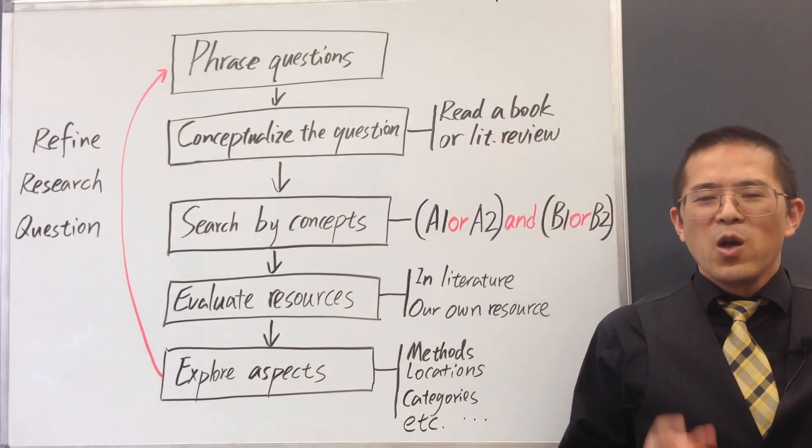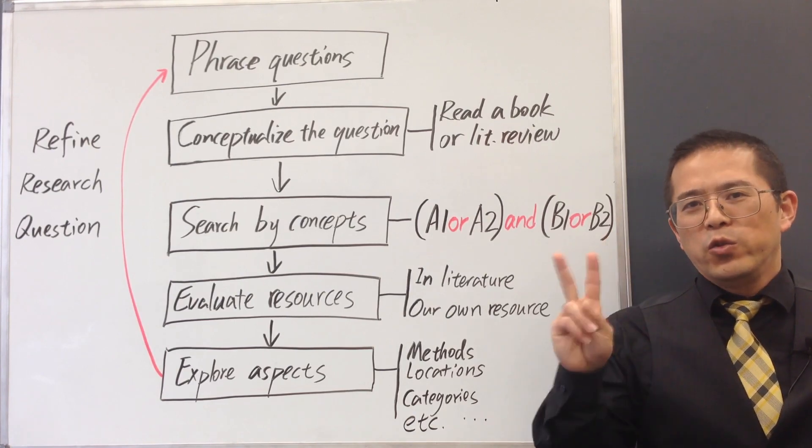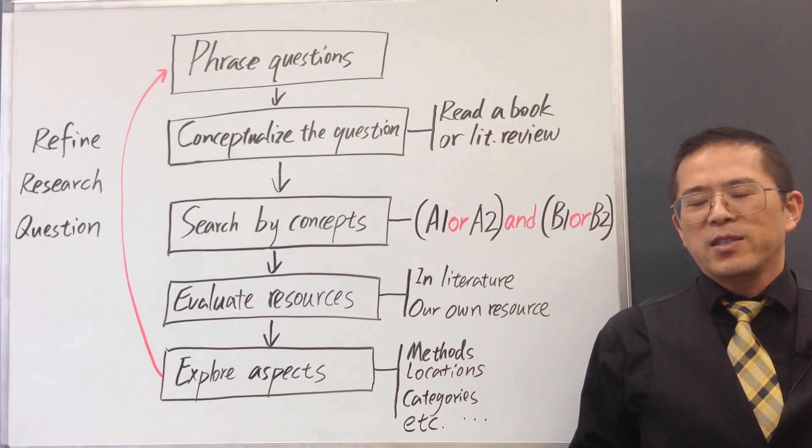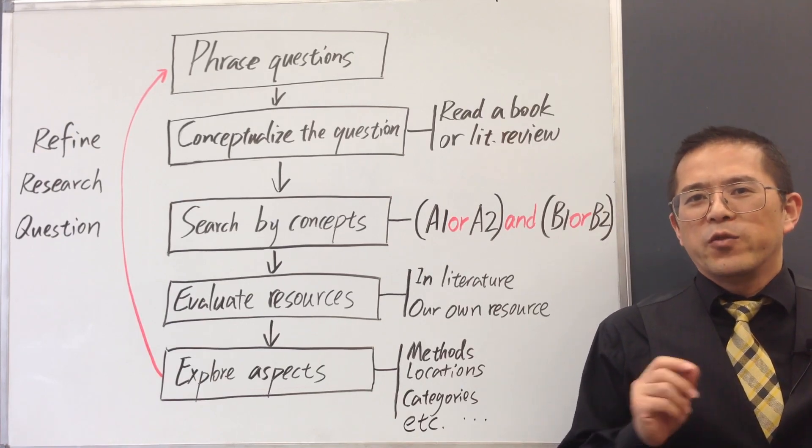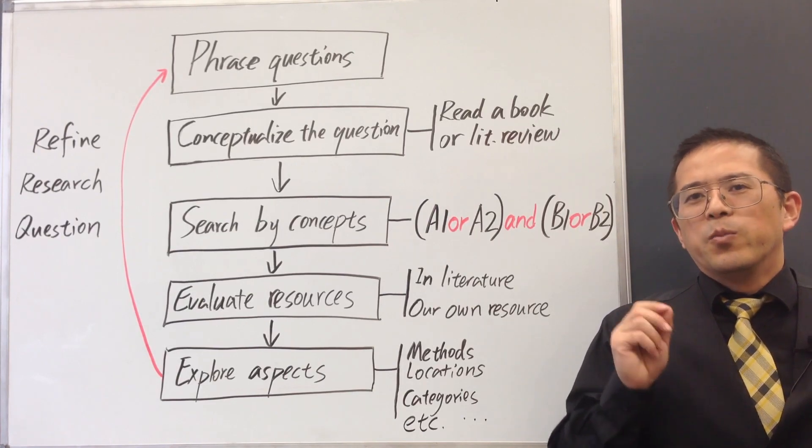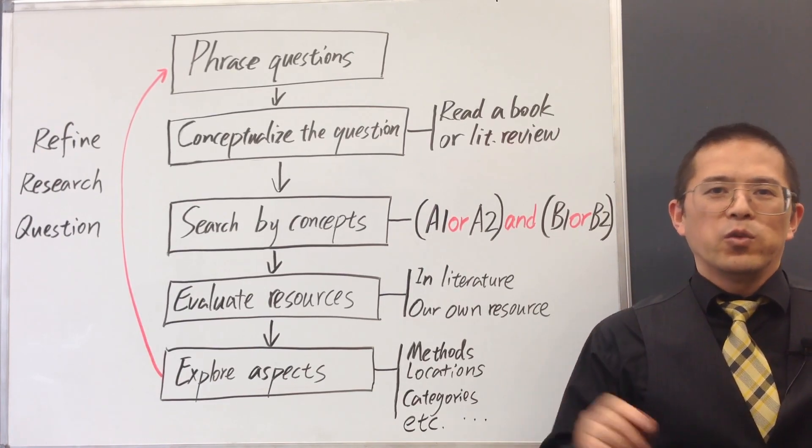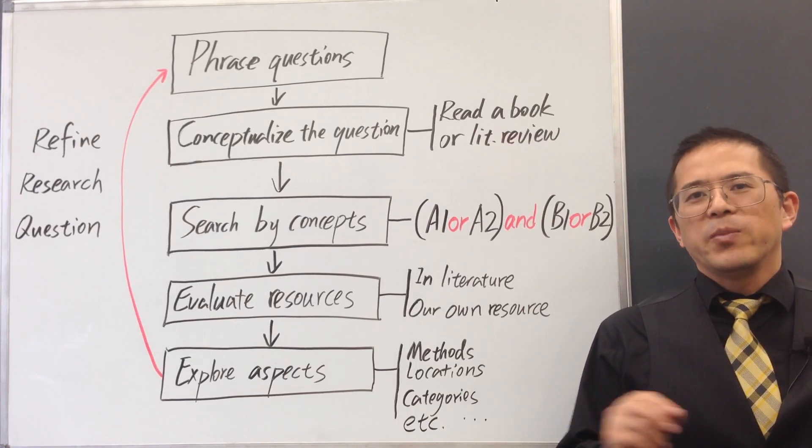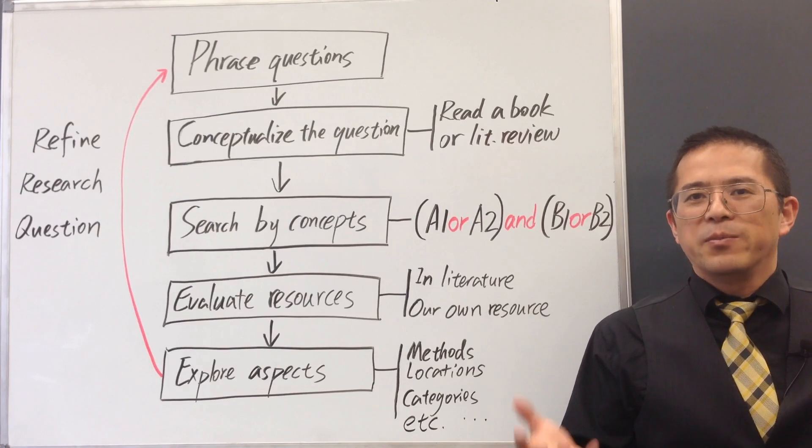First, why do we want to narrow down? There are two main reasons. The first reason is that, for a narrow topic, it is often easier for us to make solid contribution. It is more likely we can do deep and complete work, and it may take less time for us to get the work done and get published.